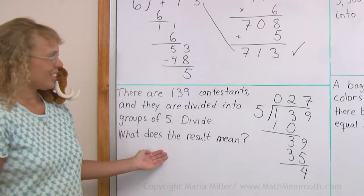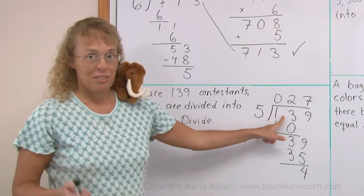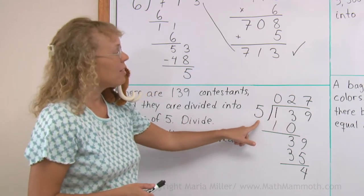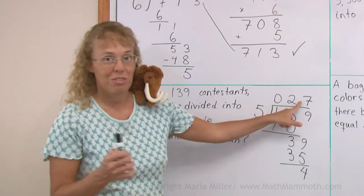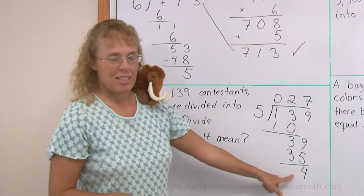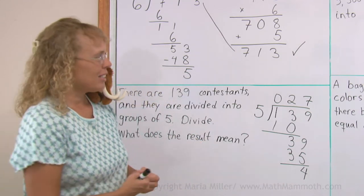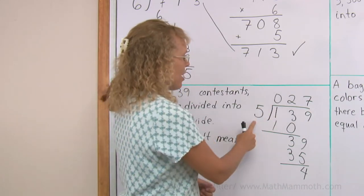In this context, we have 139 contestants. We divide them into groups of 5, and we get, this is the number of groups. We get 27 groups. Now what about this then? These 4 are the leftover contestants. Basically, you get 27 groups of 5, and there are 4 more contestants.